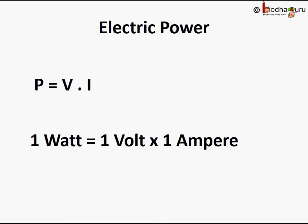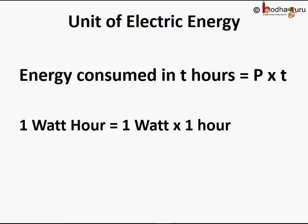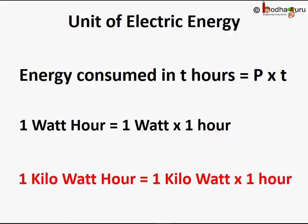Since electrical energy is the product of power and time, the unit of electrical energy is watt-hours. One watt-hour is the energy consumed when one watt of power is used for one hour. As one watt is very small for practical purposes, we use kilowatt-hour as the unit. The commercial unit of electrical energy is kilowatt-hour, commonly known as 'unit' on our electrical bills. So seven units of electrical energy means seven kilowatt-hours of electrical energy consumed by us.